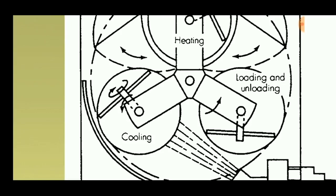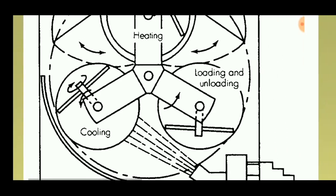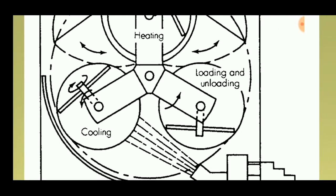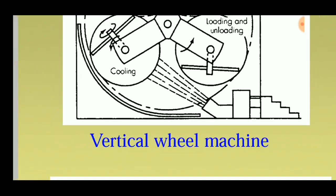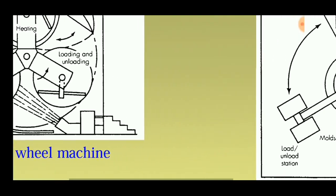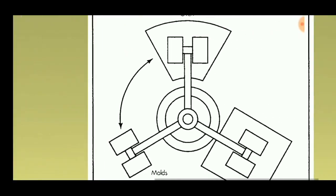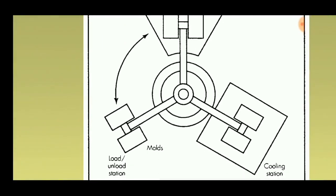Then the wheel goes to the cooling station where the plastic cools, and finally the wheel returns to the unloading station so that the plastic part can be taken out. Water can be sprinkled on the cooling station for cooling purposes.